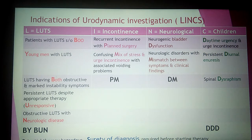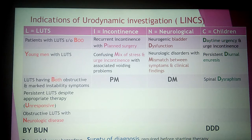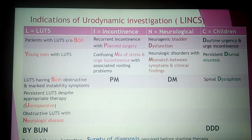The second group is I for incontinence. Under this, the sub-mnemonic is prime minister. P stands for planned surgery — any patient in which surgery has already been planned and there is recurrent incontinence. For that, it is a must to go for urodynamic investigation. The third group covers neurological dysfunction of the bladder and mismatch between symptoms and clinical findings.